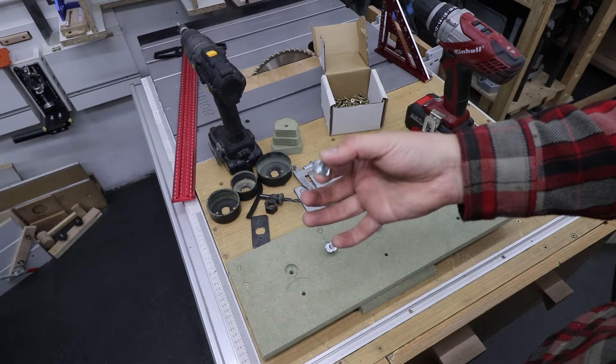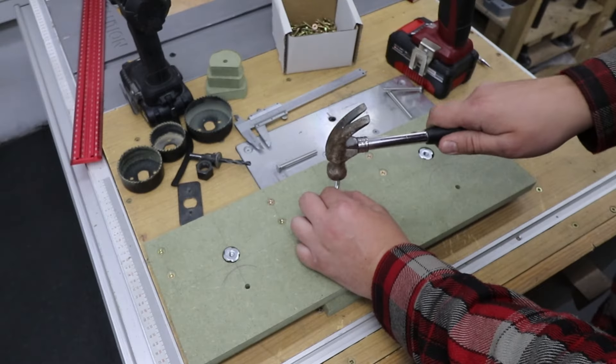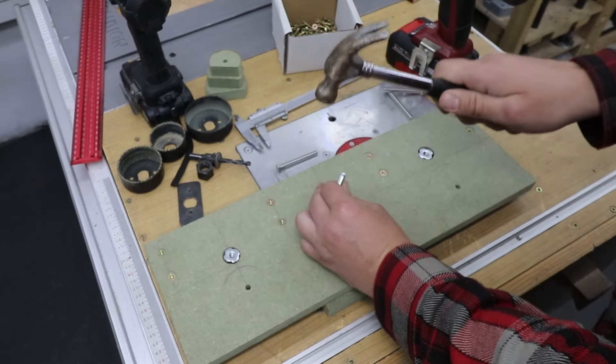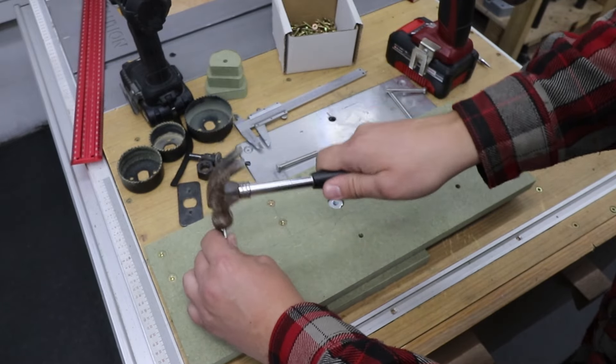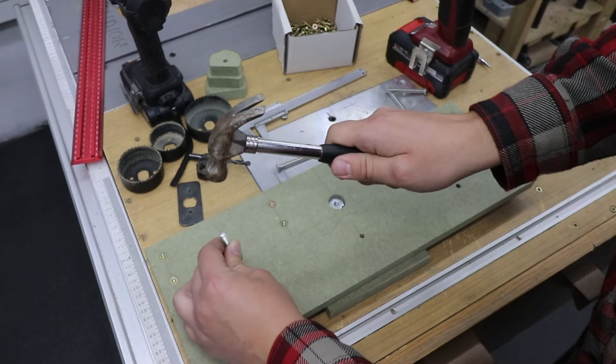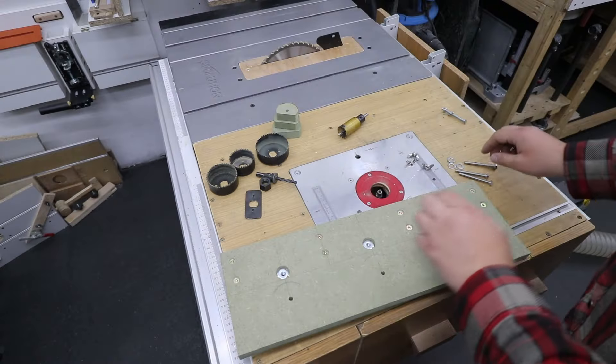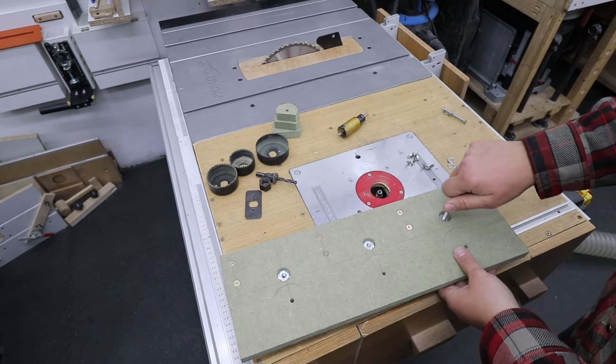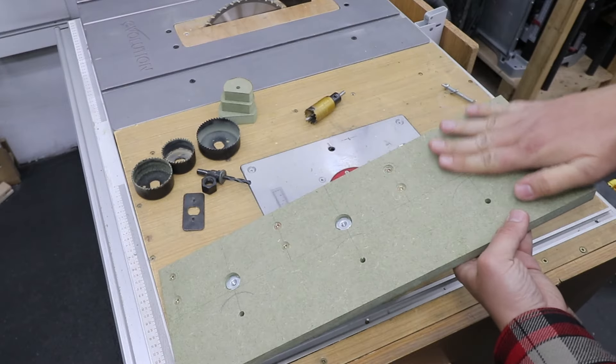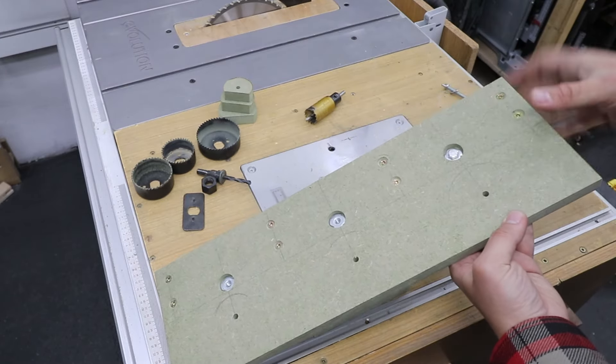With a bit of brute force we can drive in these t-nuts into place. With those in place we can drive in the bolts. As you can see it's nice and flush with the base of our jig.